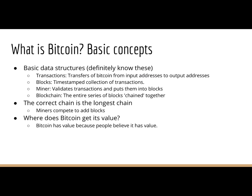Some basic data structures of Bitcoin: you have transactions, which are transfers of Bitcoin from input addresses to output addresses. You have blocks, which are timestamped collections of these transactions. Miners validate these transactions and put them into the blocks, which collectively form the blockchain. You can think of the blockchain as the entire history of all Bitcoin. Miners are essentially competing to add blocks to the blockchain, and it's really difficult to add blocks. This is why we consider the correct chain to be the longest chain, because we assume that no more than 51% of the network is going to be dishonest.